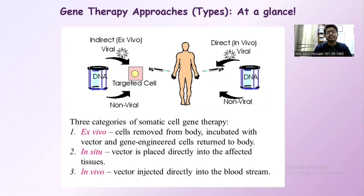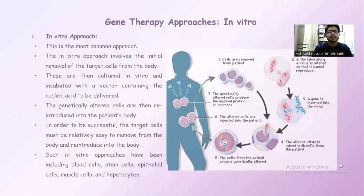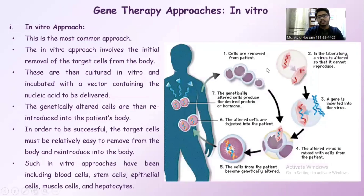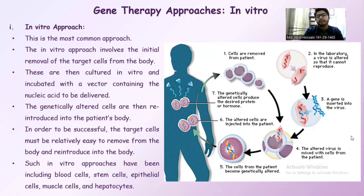In situ means the vector is placed directly into the affected tissue — it can be in the heart, brain, or any other part of the body. The in vitro approach involves the initial removal of targeted cells, which are then altered with a virus in a laboratory where the gene is inserted into the virus. The altered virus is mixed with the patient's cells, making them genetically altered, and finally the altered cells are injected back into the patient's body to produce the desired protein.